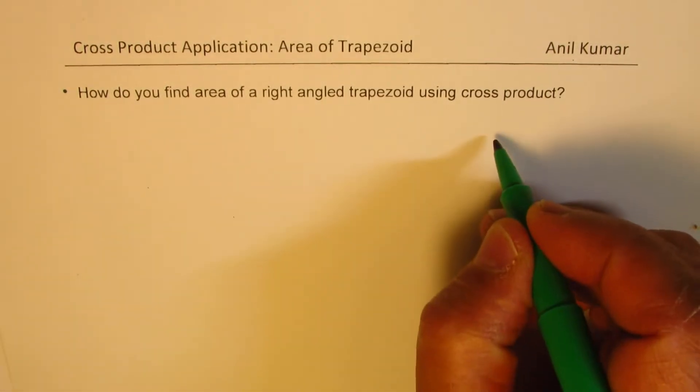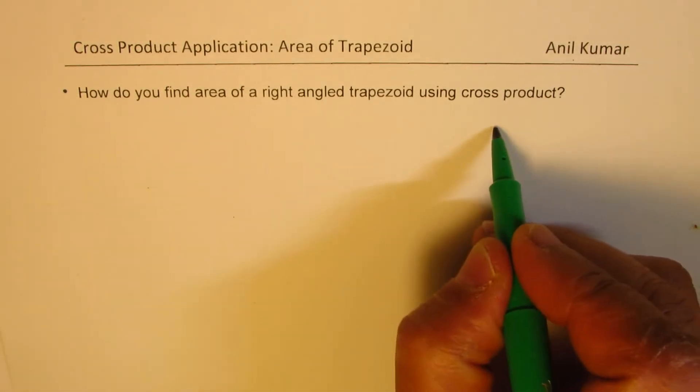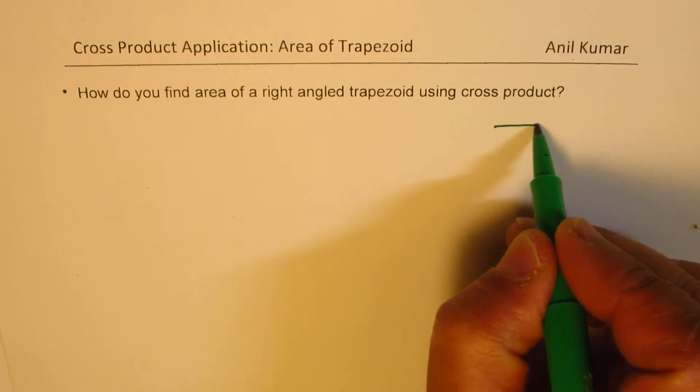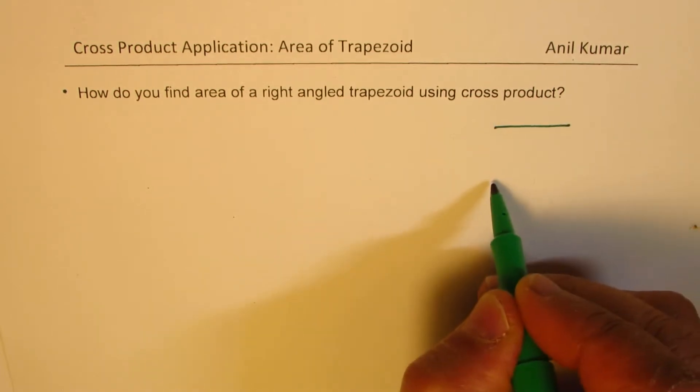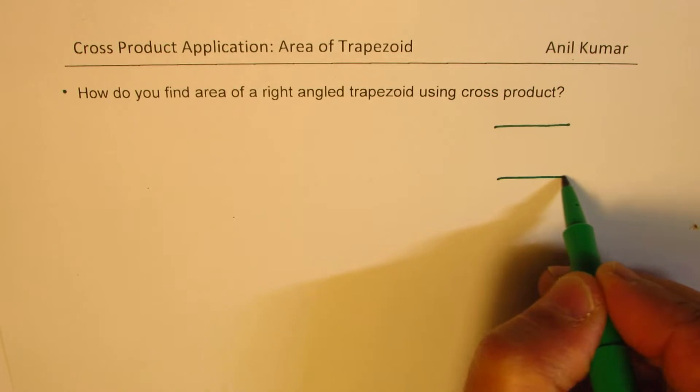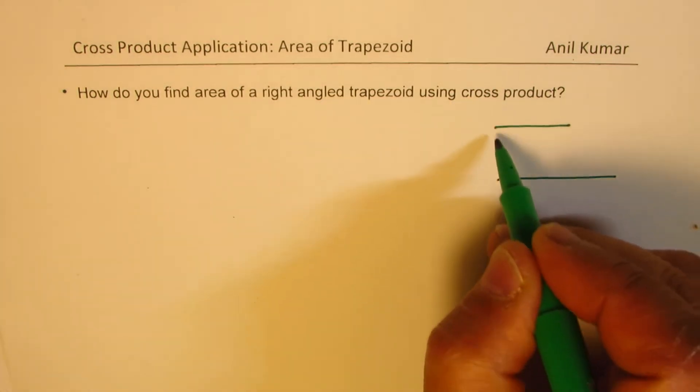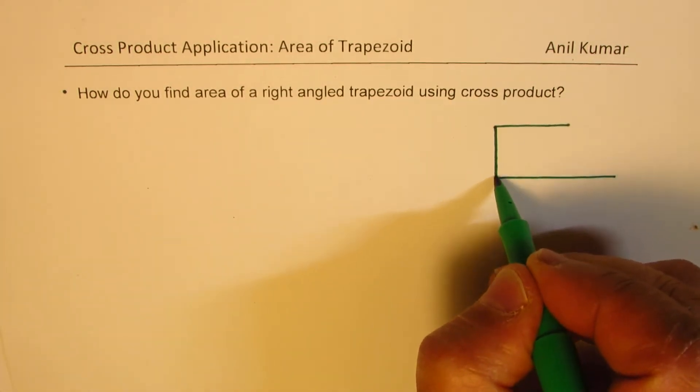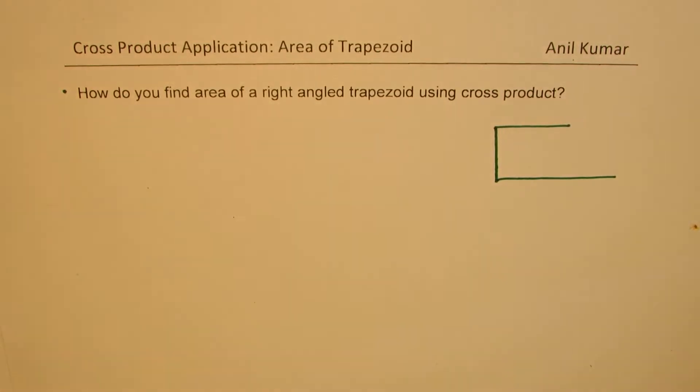What is a right angle trapezoid? We know in a trapezoid, we have a set of parallel sides. Let us say these are two parallel sides. When it is right angled, then one set is at right angles.